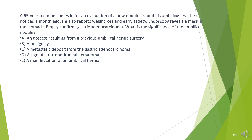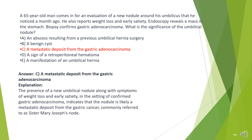A. An abscess resulting from a previous umbilical hernia surgery. B. A benign cyst. C. A metastatic deposit from the gastric adenocarcinoma. D. A sign of a retroperitoneal hematoma. E. A manifestation of an umbilical hernia.